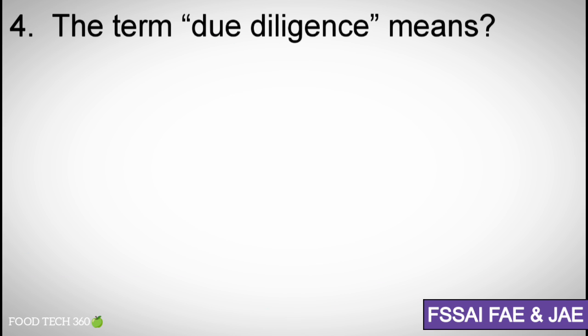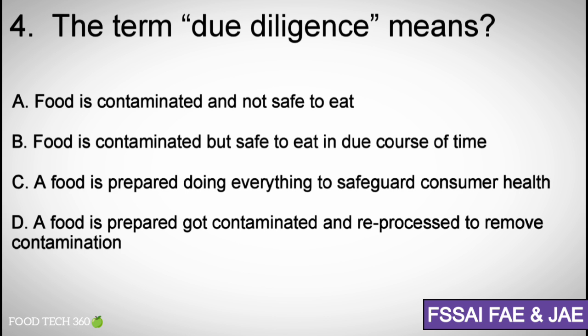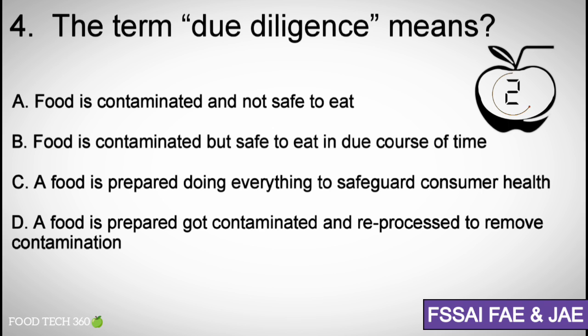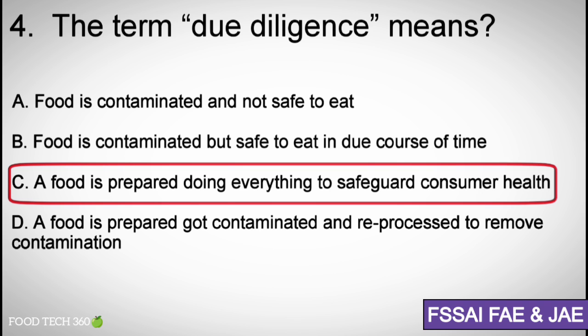Question number four: The term 'due diligence' means — Options: A) Food is contaminated and not safe to eat, B) Food is contaminated but safe to eat in due course of time, C) A food is prepared doing everything to safeguard consumer health, D) A food is prepared, got contaminated, and reprocessed to remove contamination. Correct answer: C) A food is prepared doing everything to safeguard consumer health.